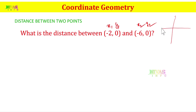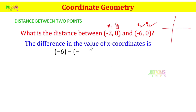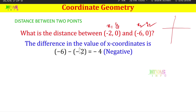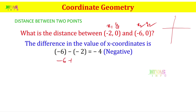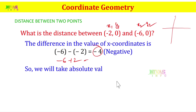So we use -6 and -2. Here is 2, here is 6 — this is the distance. The difference in the x-coordinate values is: (-6) minus (-2) equals -6 plus 2 equals -4. But how can distance be negative? Distance cannot be negative, so we take the absolute value of the difference.